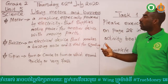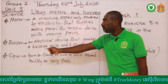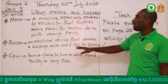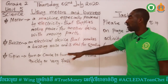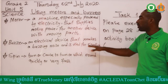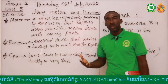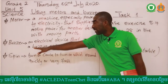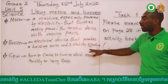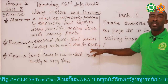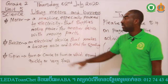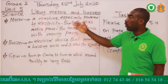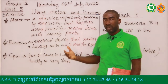Then what is a buzzer? A buzzer is an electrical device that makes a buzzing noise and it's used for signaling. So when you want to make a buzzing noise you need a buzzer, and when you want to use something for signals you also need a buzzer.